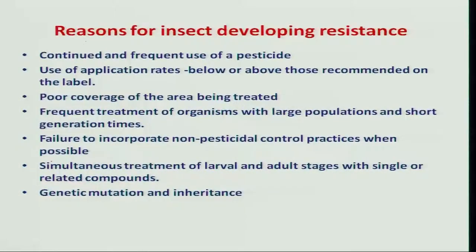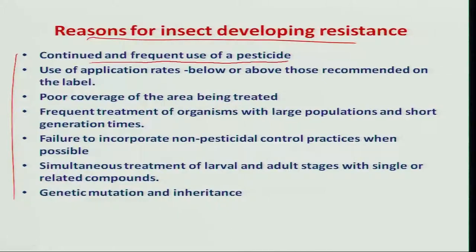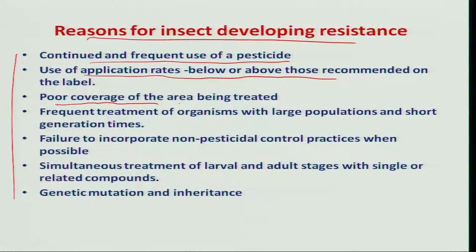We need to understand why resistance develops in insects. First and foremost is continued and frequent use of a pesticide — overexposing a particular pesticide molecule to a pest; applying the principle of selection pressure, insects start developing resistance. Second is use of application rates below or above the recommended ones; both lower and higher doses have major impact on resistance development. Third is poor spray coverage of the pesticide in the treated area, which always leaves the possibility of insect survival wherever the spray has not covered.